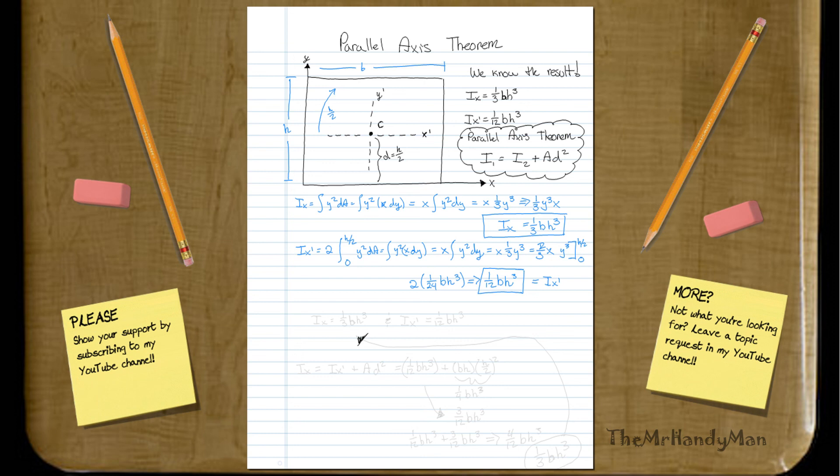And, so, first of all, we know that ix is going to equal, our inertia about x, is going to equal 1 third base times height cubed. And, we also know that about x prime is going to be 1 twelfth base times height cubed. So, we know those two things.